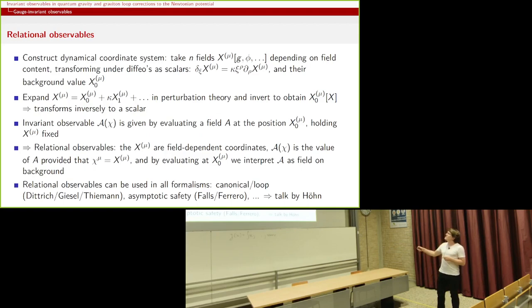Relational observables. Kasia told us this morning in a very mathematical way how to construct these. So maybe for physicists such as me, I need a more pedestrian way. That's a pedestrian way. We take n scalar fields. So if we're in n dimensions, if we're in four dimensions, we take four. They can depend on the field contents, on the metric, matter fields, whatever you have. And they should transform as scalars under diffeomorphisms. I'm perturbative, so I also take a background. I expand my function of whatever I have in perturbation theory. I invert that, so then I get x_0 as a function of x. And if x transforms as a scalar, that transforms inversely to a scalar. So now I can just compose. I evaluate my field A that I want to measure at the position x_0 and hold the capital X fixed. And this is something relational.